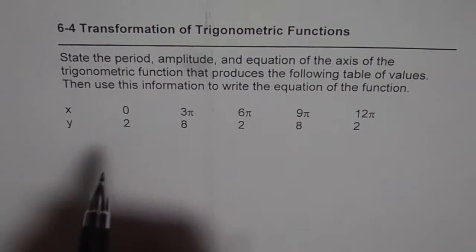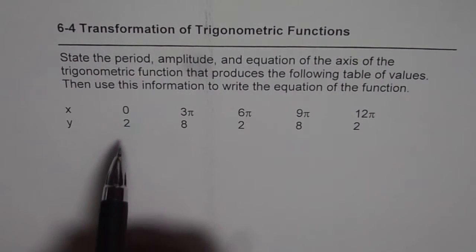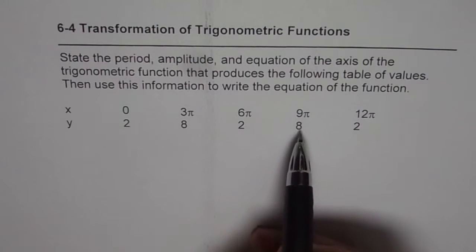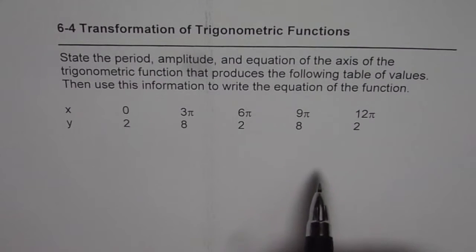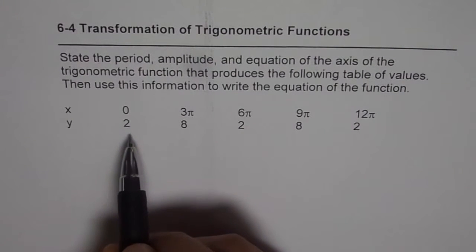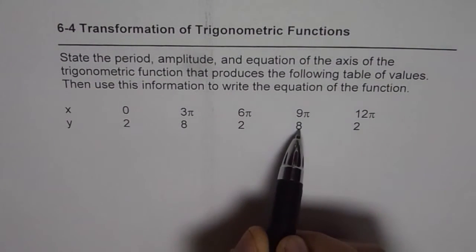What we are given here is a set of 5 key points for a trigonometric function. At x=0, y=2; at 3π, y=8; at 6π, y=2; at 9π, y=8; at 12π, y=2. What you observe here is that the minimum value is 2 and the maximum value is 8.